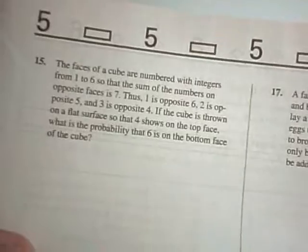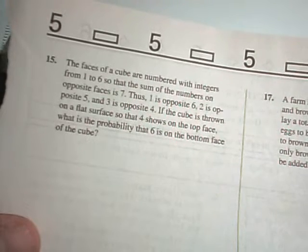Alright, let's keep on going here. So, in problem 15, the faces of a cube are numbered with integers from 1 to 6, so the sum of the numbers on opposite faces is 7. So, 1 and 6 are opposite, 2 and 5 are opposite, and 3 and 4 are opposite. It says, if the cube is thrown on a flat surface so that a 4 shows on the top face, what is the probability that a 6 is on the bottom face of the cube? Well, the probability would be 0. We know that if there's a 4 on the top, there has to be a 3 on the bottom. So, the probability that 6 is on the bottom would just be 0. There's no probability of it happening. It's definitely not going to happen.